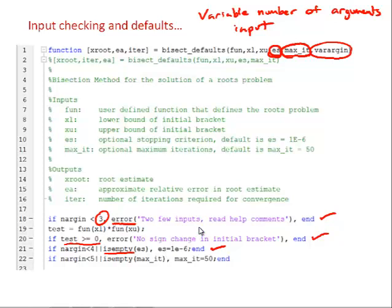Then we're just going to set a default value for ES equal to 10 to the minus 6. And then the same thing for the maximum number of iterations. We will set a default value of 50 if there are less than five arguments to the function, and the maxit variable does not have a value.